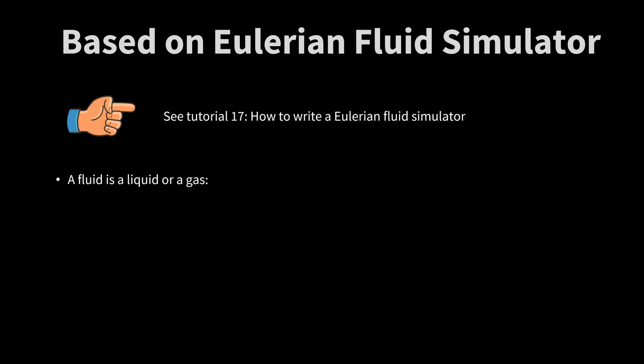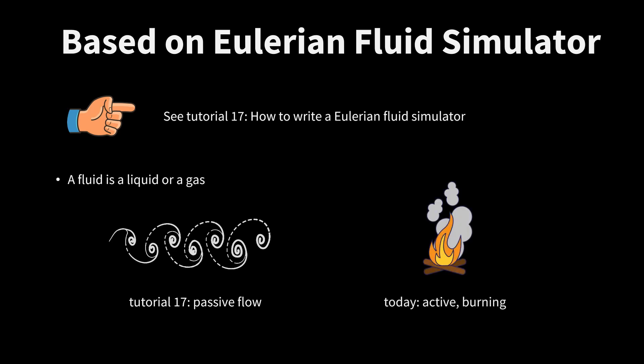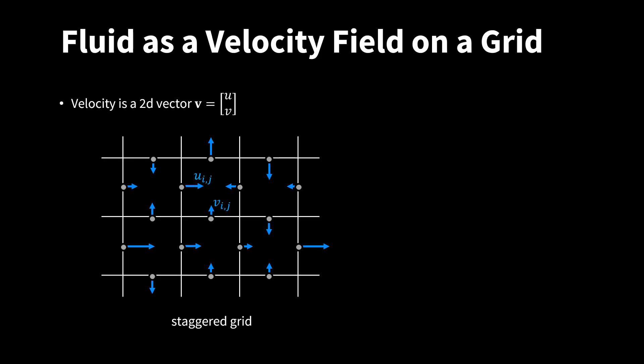A fluid is a liquid or a gas. In tutorial 17, we looked at passive fluids that are just pushed around. Today we look at active fluids, gas that is burning. In the Eulerian fluid simulation method, a fluid is represented by a velocity field stored on a grid.